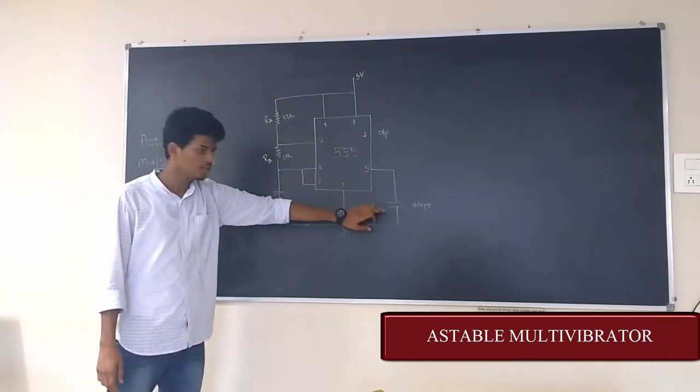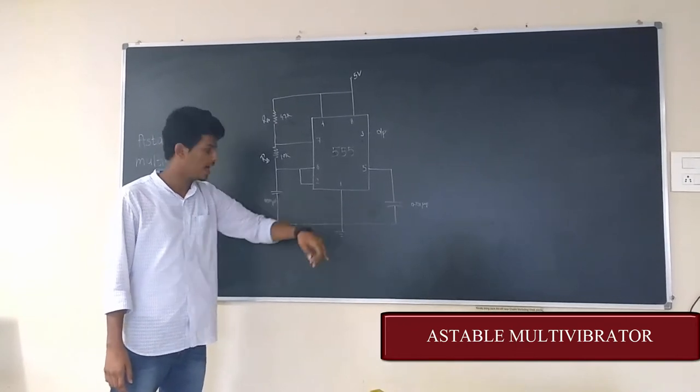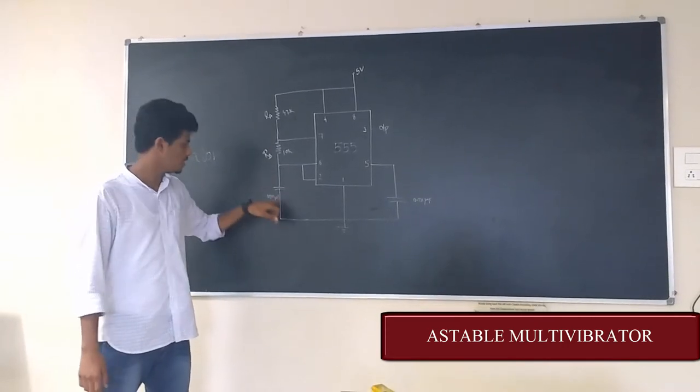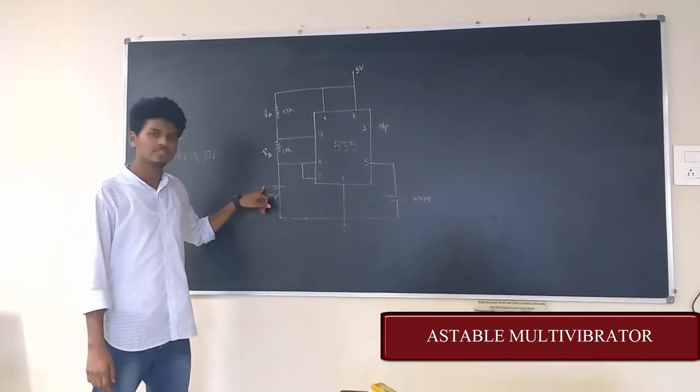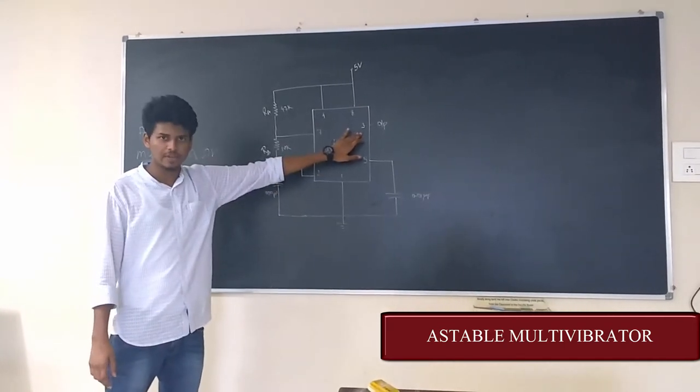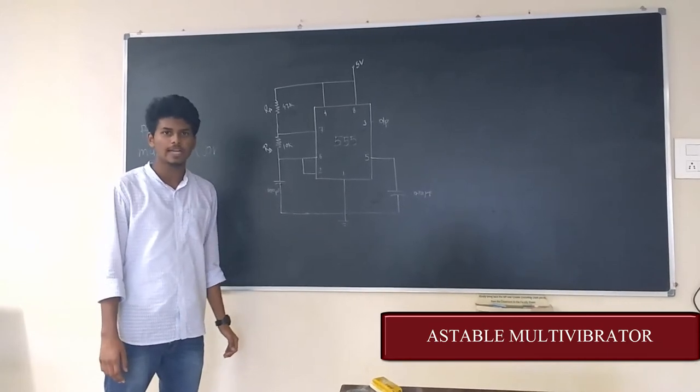The fifth pin is connected to a capacitor of 0.01 microfarad and it is connected to ground. Also, Rb is connected to ground with a capacitor of 680 picofarad. The output waveform is a square wave, through which we will calculate t-on and t-off, that is on time and off time.